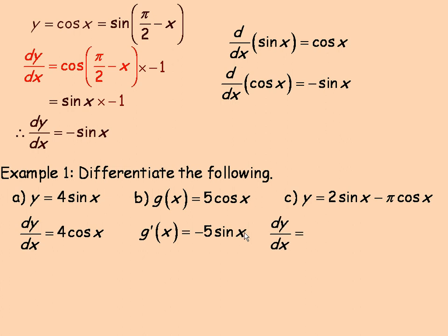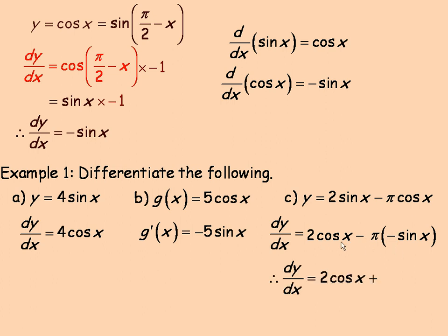For part c, there are two parts, so we differentiate each term. The derivative of 2 sine x is 2 cos x, and then minus π times the derivative of cos x. The derivative of cos x is negative sine x, so that becomes minus π times negative sine x. Multiplying two negatives gives a positive, so the result is 2 cos x plus π sine x. Pi is just a constant, no different than 2 — just as we differentiate 2 sine x as 2 times the derivative of sine x, we do the same for π.